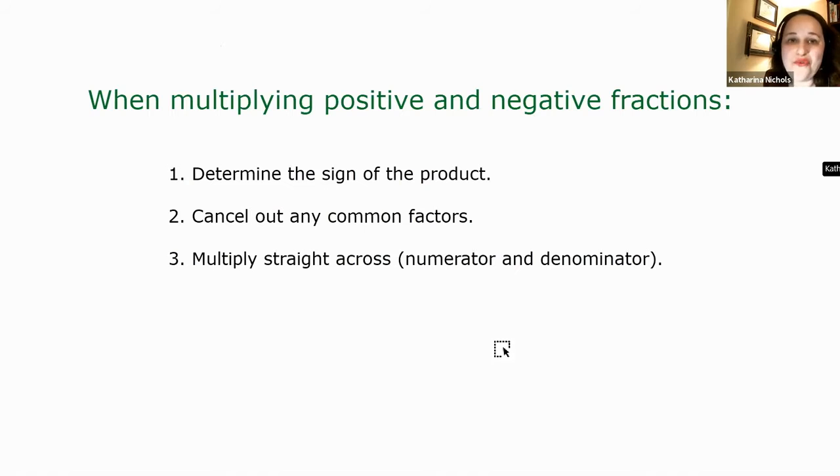When multiplying positive and negative fractions, there are three simple steps. One, determine the sign of the product. Two, cancel out any common factors. And three, multiply straight across.